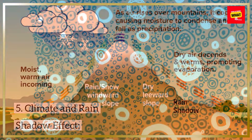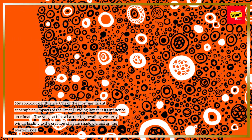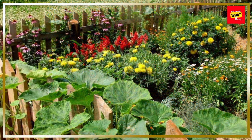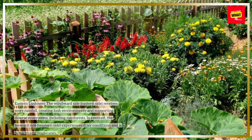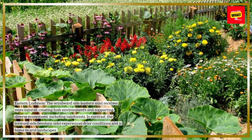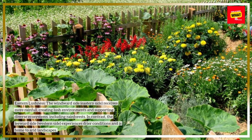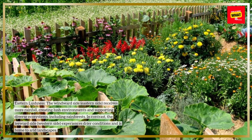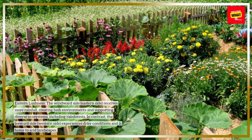Climate and Rain Shadow Effect: Meteorological influence. One of the most significant geographical impacts of the Great Dividing Range is its influence on climate. The range acts as a barrier to prevailing westerly winds, leading to the creation of a rain shadow effect on the western side. The windward (eastern) side receives more rainfall, creating lush environments and supporting diverse ecosystems, including rainforests. In contrast, the leeward (western) side experiences drier conditions and is home to arid landscapes.